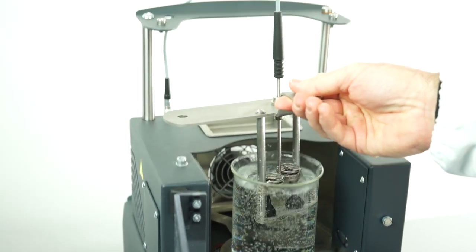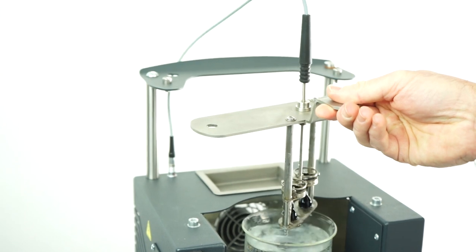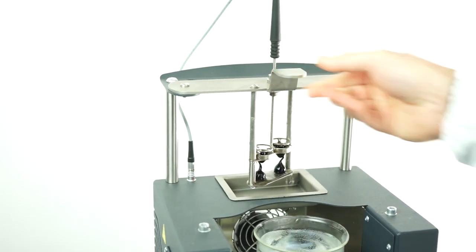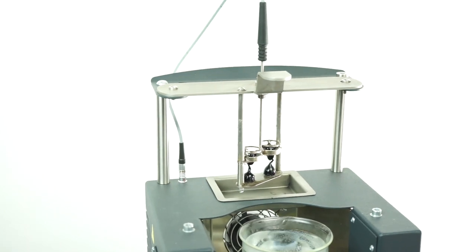It's now possible to remove the specimen holder, put it on its support at the top of the machine, and remove the temperature probe. The drip tray will collect the liquid leaking from the specimens.